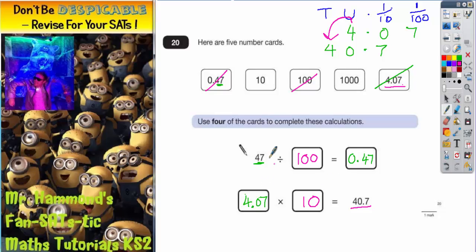And just briefly check my answers. 47 divided by 100 is 0.47. Yes. And 4.07 times 10 is 40.7. Yes.